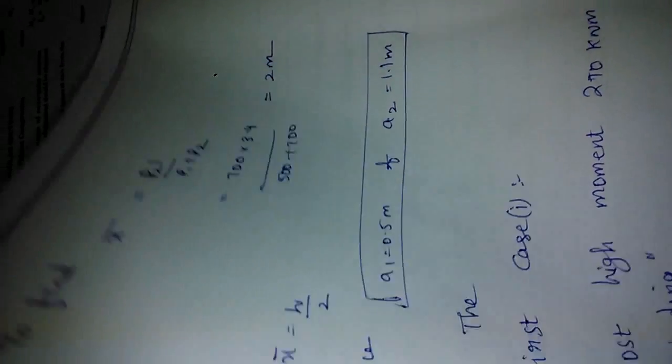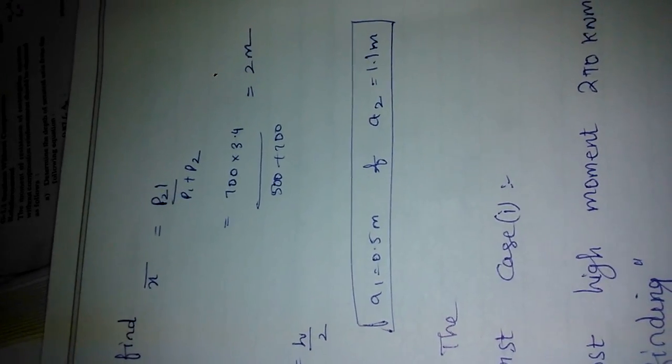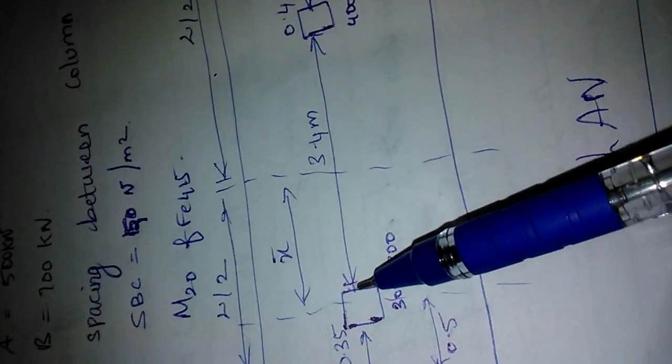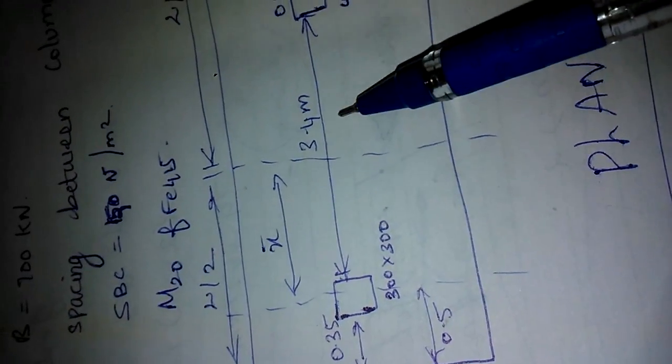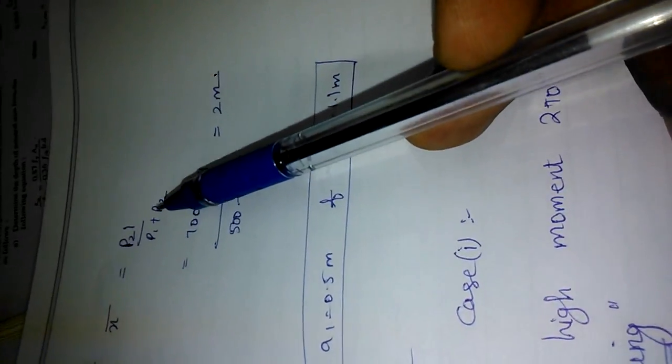So let me tell you how to work it out. To find x bar we know P2L divided by Q1 plus P2 is how we use x bar. That is distance between these two. So we found this distance using this formula P2L divided by P1 plus P2.